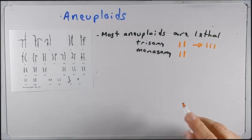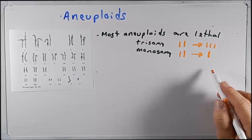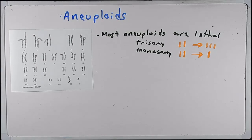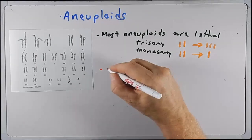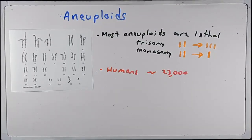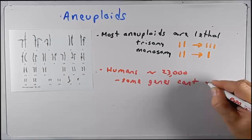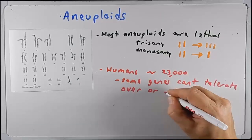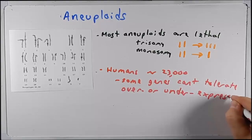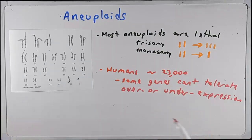Likewise, one might think if you go from having two copies of a chromosome in a euploid and you lose one — making the cell a monosomy — you still have one good copy of all those genes. So why is that a problem? In humans there are approximately 23,000 genes, give or take. It turns out that some of these genes can't tolerate over- or under-expression — meaning being trisomic, which means having more of those genes, or being monosomic, which means having fewer.